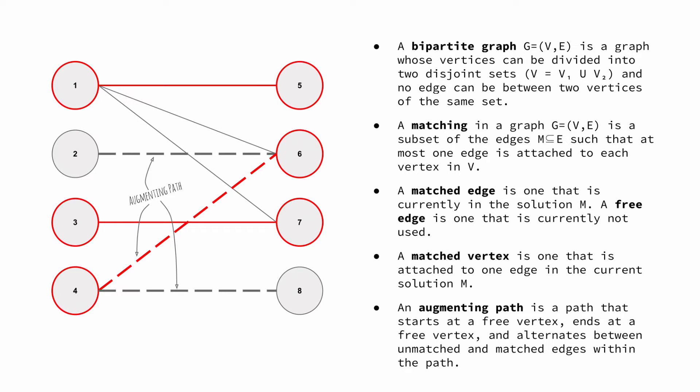An augmenting path is a path that starts and ends at the free vertex and follows an alternating pattern switching between unmatched and matched edges.